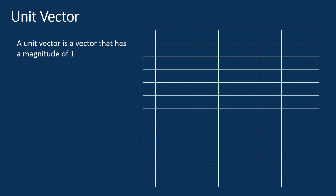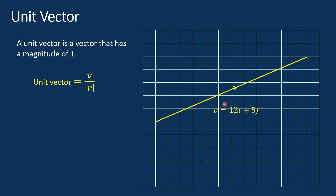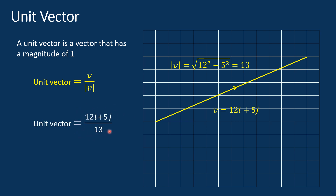Unit vector. A unit vector is a vector that has a magnitude of 1 — in other words, a vector of length 1. It is often used in mathematics and physics to simplify calculations and express directions. To find the unit vector of a given vector, we divide the vector by its magnitude. For example, if v = 12i + 5j, the magnitude equals √(12² + 5²) = 13. The unit vector equals (12i + 5j) / 13 = (12/13)i + (5/13)j.